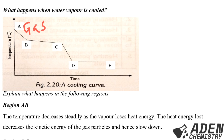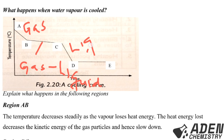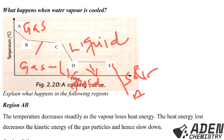In region BC, the gas is being converted to liquid water. In region CD, it is the liquid phase or the liquid state. And in region DE, we are having the liquid being converted to solid — that is the solid state or the solid phase.